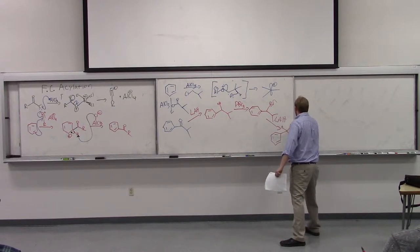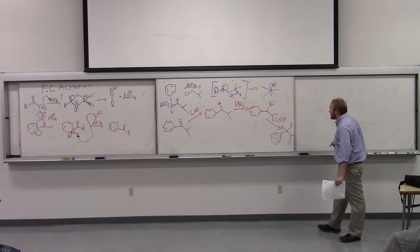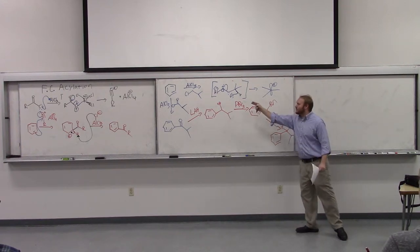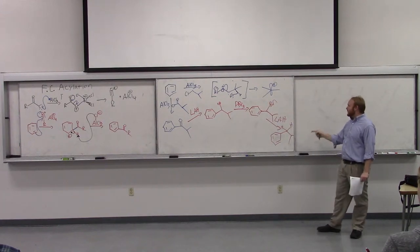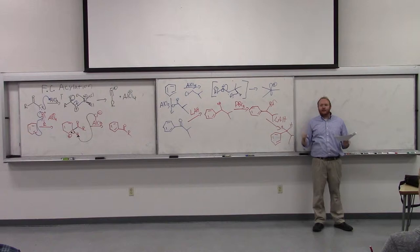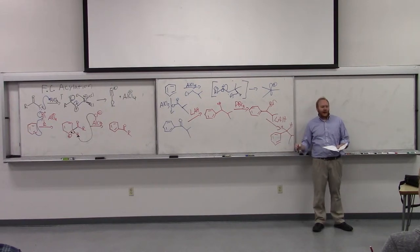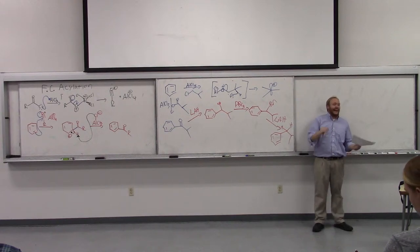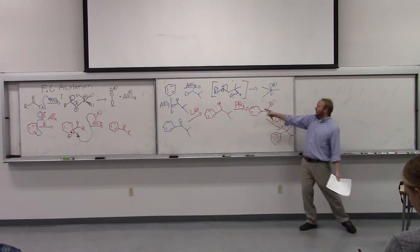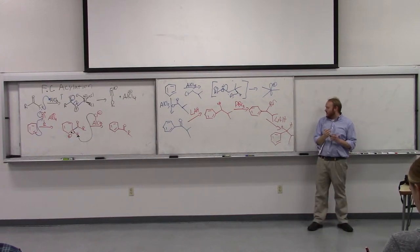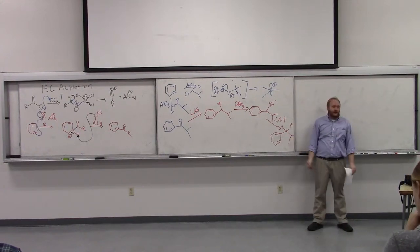By doing those three steps, we can take a Friedel-Crafts acylation product and turn it into a Friedel-Crafts alkylation product. So if you can't make it by Friedel-Crafts alkylation because of cationic rearrangement, you can do a Friedel-Crafts acylation and then LAH, PBr3, and more LAH in three steps to make the alkylation product. But there's a better way.